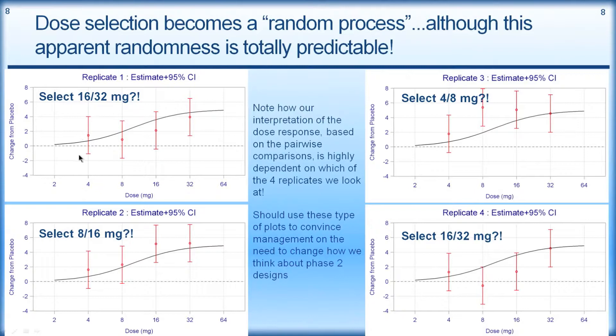Looking at these simulated results: in one case we might decide to move forward at 16 and 32 milligrams; in another we might be very happy with a large treatment effect and choose 8 and 16; in another, everyone would be convinced the maximum effect was reached at 8 milligrams and progress 4 and 8. Of course the truth is the black line, which is what you'll be getting closer to in Phase III. You're not going to make good decisions about dose selection if you run the study this way.